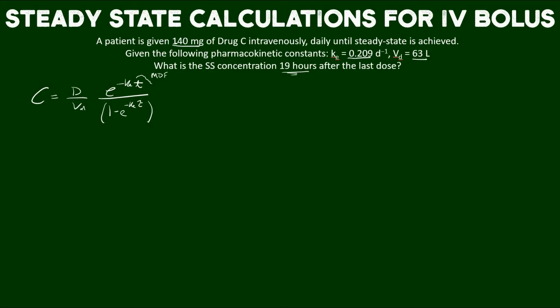Let's go ahead and start to put in the numbers. We have the dose over the volume of distribution. Here we have the rate elimination constant put into both the numerator and denominator, which is 0.209 days^-1. We have our dosing interval or tau, which is given daily, so it's one day.